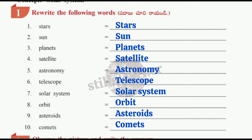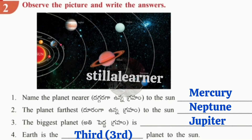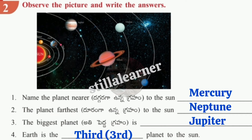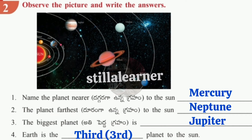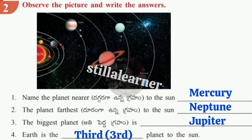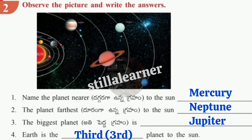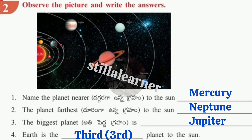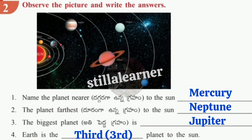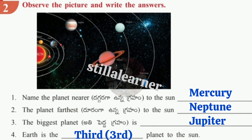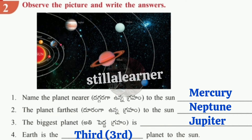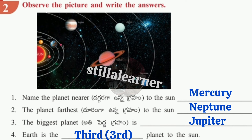Worksheet 7: observe the solar system picture and write the answers. Name the planet nearest to the sun: Mercury. The planet farthest from the sun: Neptune. The biggest planet: Jupiter. Earth is the third planet from the sun.